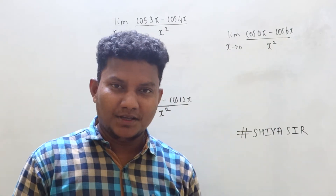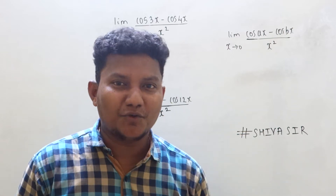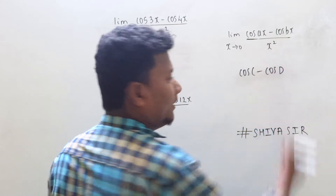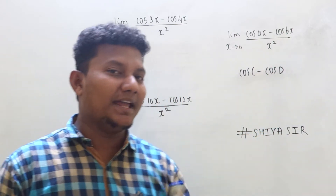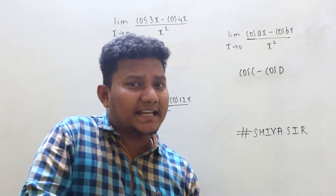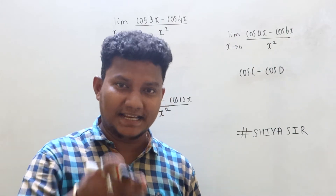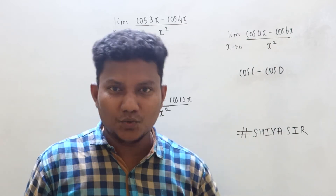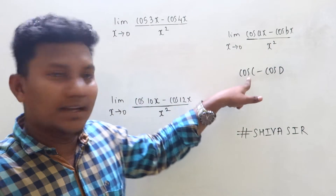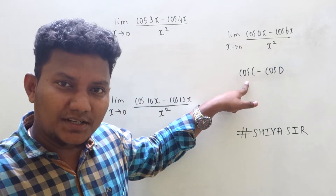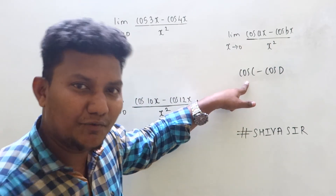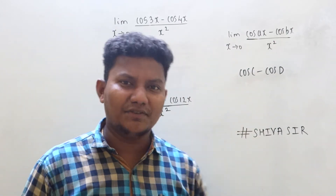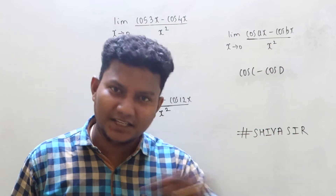In the traditional way, we apply the formula of cos C minus cos D. In the second-to-last step, you apply the formula of limit — that is sin x upon x, limit x tends to 0 — where you get the answer equal to 1. So first we apply cos C minus cos D, then apply the limit formula and get the answer, but that is a lengthy traditional way.